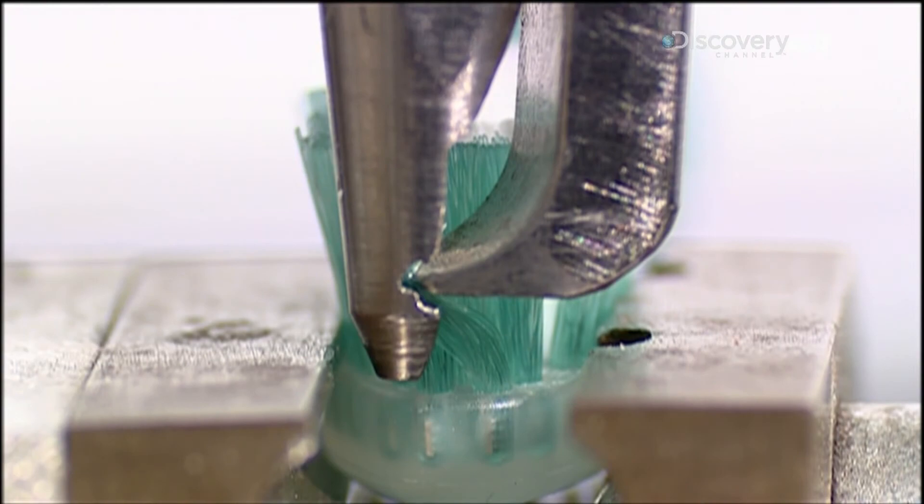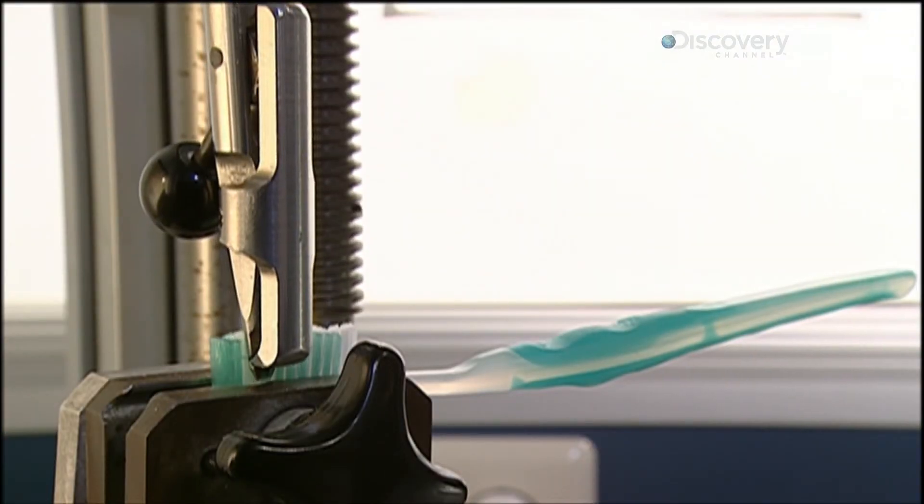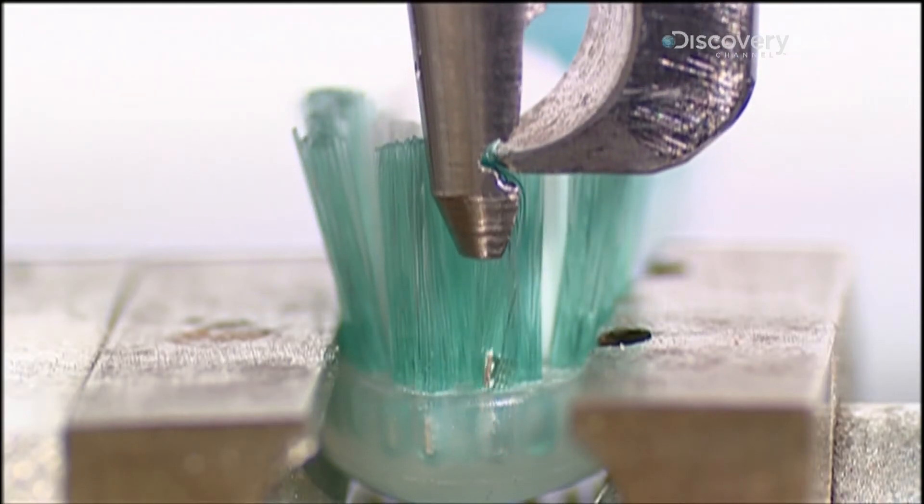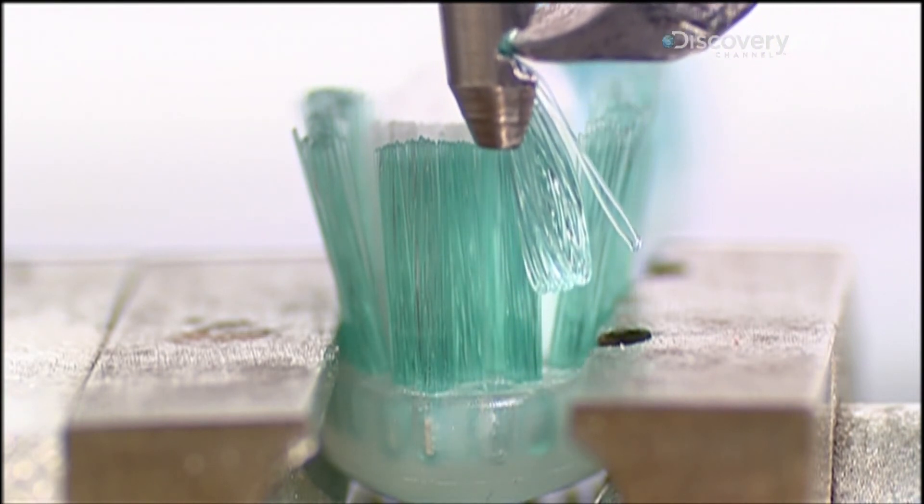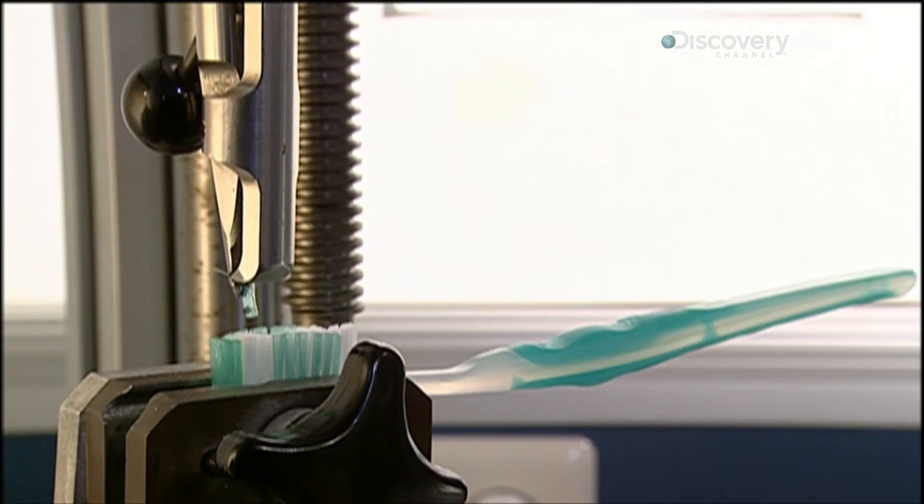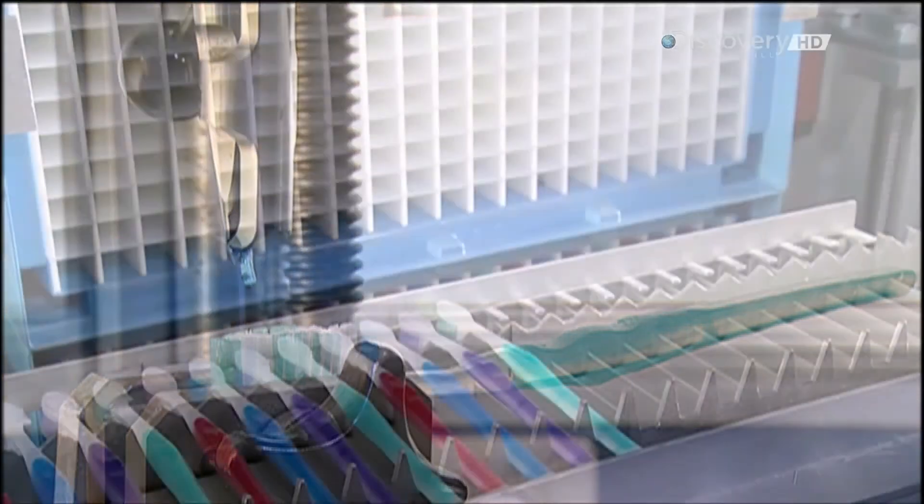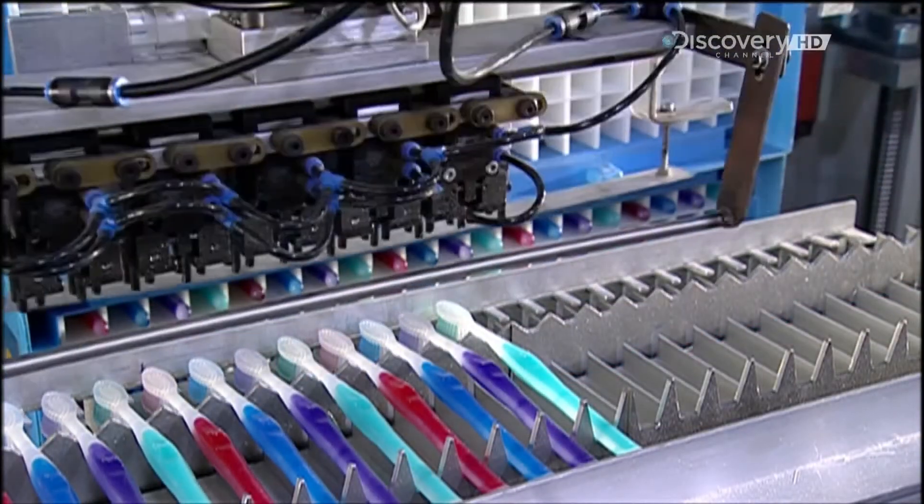Every so often, the factory pulls a toothbrush off the assembly line for a spot check. A robotic arm tugs at the bristles to make sure they're secure enough. And if the brush passes the test, the rest of the production run is cleared for sale.